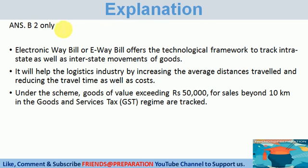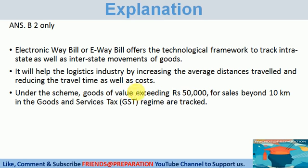The correct answer is B. 2 only. The electronic e-way bill offers the technological framework to trace interstate or intrastate movement of goods. It will help the logistics industry by increasing the average distance of travel and reducing the travel time as well as cost.